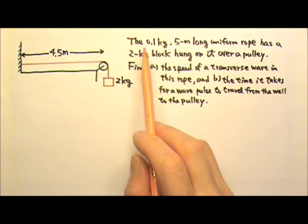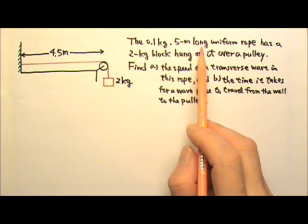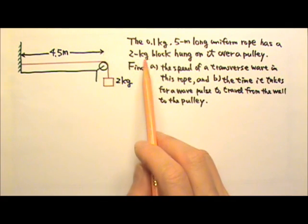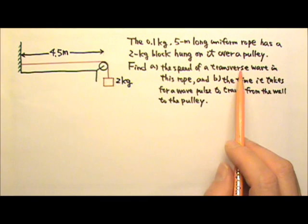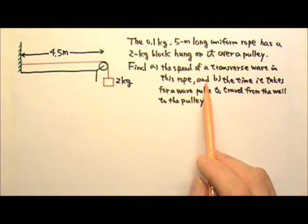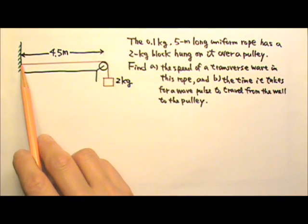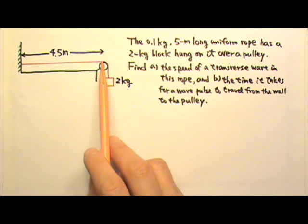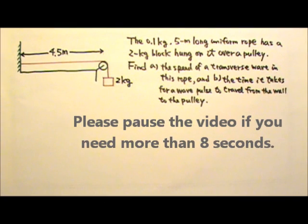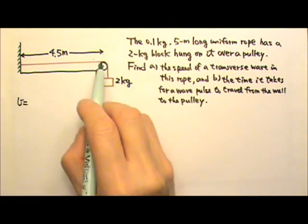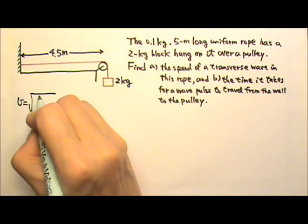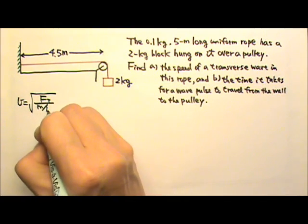Now let's try this problem. A 0.1 kg, 5 m long uniform rope has a 2 kg block hung on it over a pulley. Find A, the speed of a transverse wave in this rope, and B, the time it takes for a wave pulse to travel from the wall to the pulley. The speed of a transverse wave in a rope is the square root of the tension divided by mass per unit length.